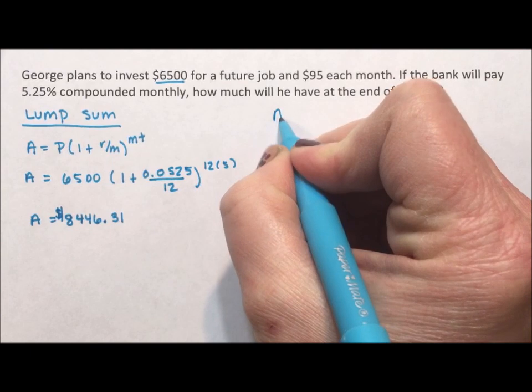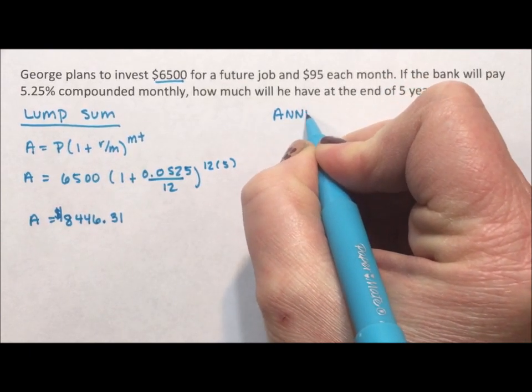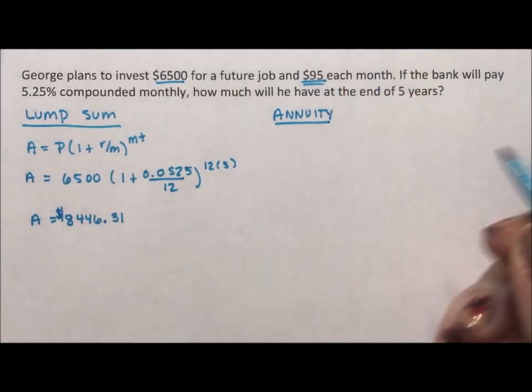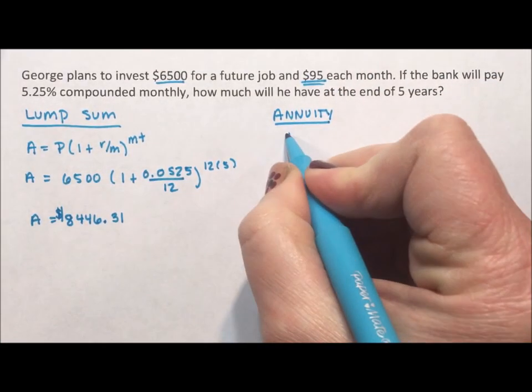The second thing is the annuity. The annuity is this $95 each month. That is a periodic payment.